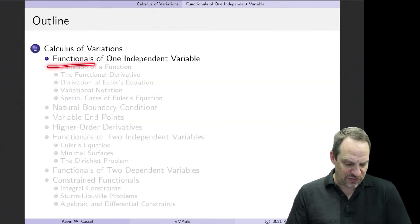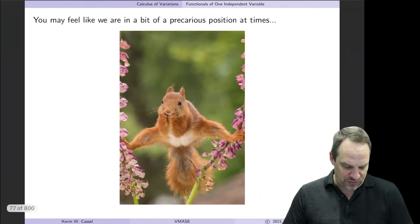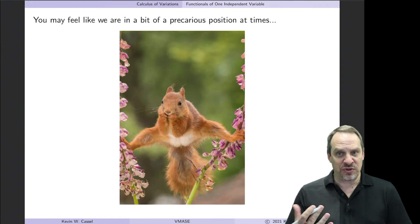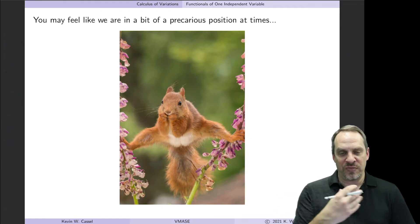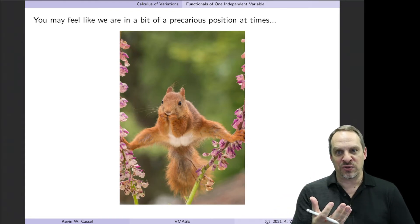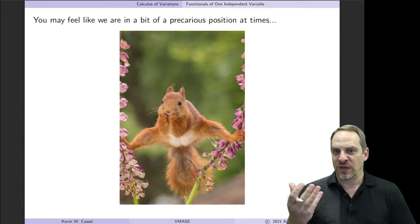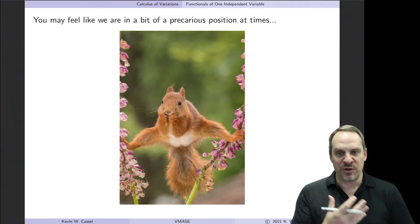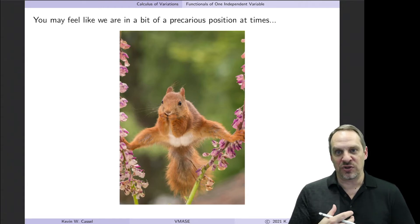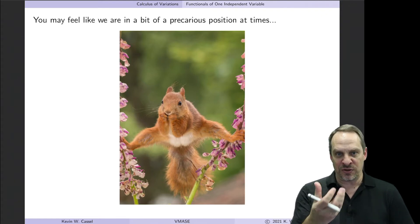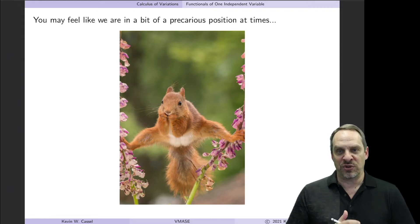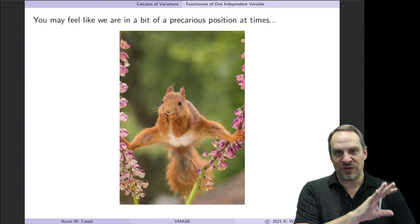Let's look at functionals of one independent variable. You may feel a little precarious as we go through this, because we're translating from one language to another. Anyone who has learned a second language knows how difficult that is at first — you translate every word back and forth, it's very tedious and cumbersome. As you get more comfortable, you can start to think in that new language and use its vocabulary and notation. That second language here is variational methods and variational notation.